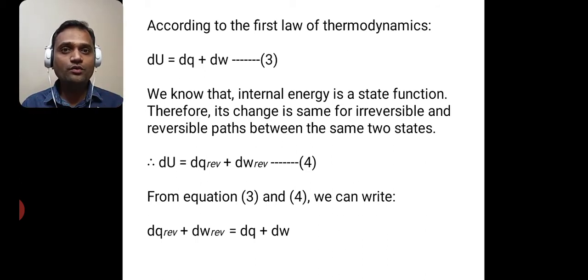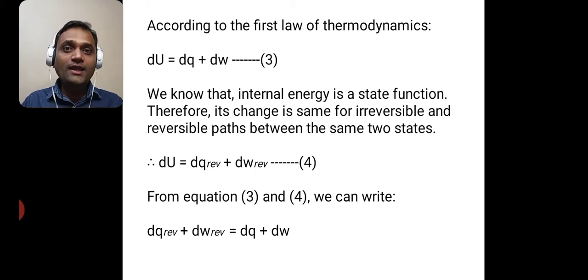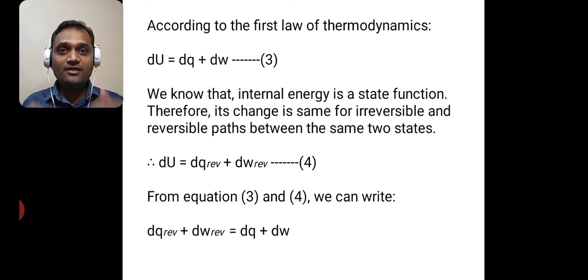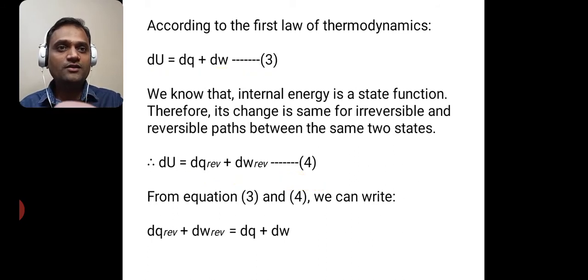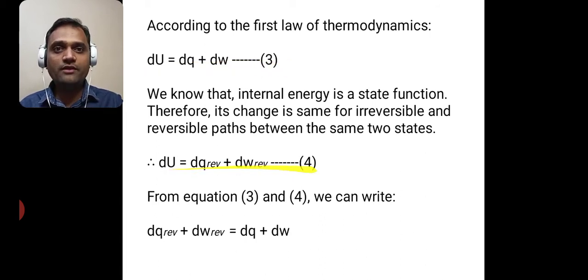Because du, the change in internal energy, is a state function, whether our process is reversible or irreversible, the change in internal energy is the same for both processes. Therefore, we can write du is equal to dq reversible plus dw reversible. So equation 3 is for the irreversible process while equation 4 is for the reversible process.